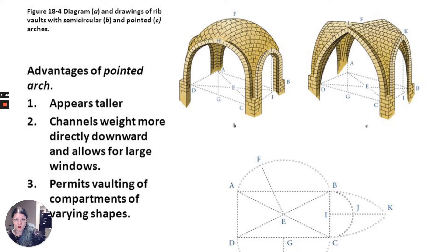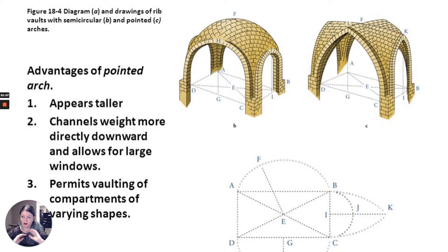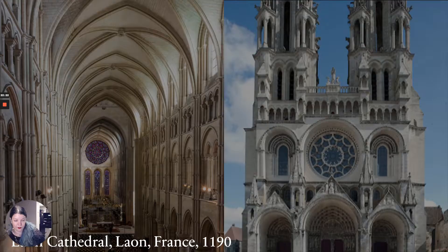Let's talk about why pointed arches are so important structurally in the Gothic. First, they make everything appear taller, pushing upward toward the heavens, praising God. Most importantly, the pointed arch channels more weight directly downward, which means they're able to add greater fenestration — more and larger windows. It also allows the vaulting of compartments of various sizes, so it's more adaptable because it's structurally stronger.